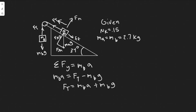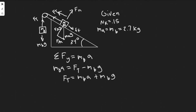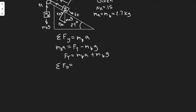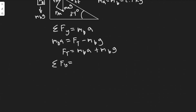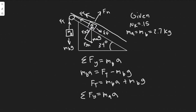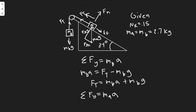Now sum the forces in the y-direction for block MA. Since the y-axis is perpendicular to the incline and MA only moves along the incline (x-axis), it has no acceleration in the y-direction. Therefore a = 0 in y, and the sum of forces in y equals 0.